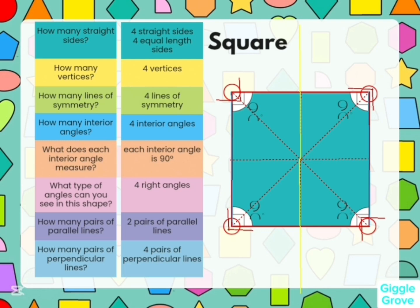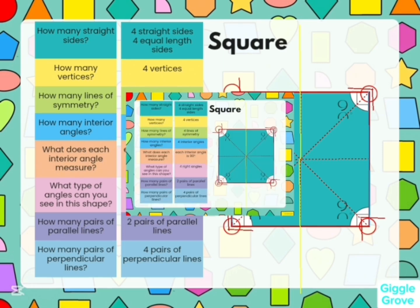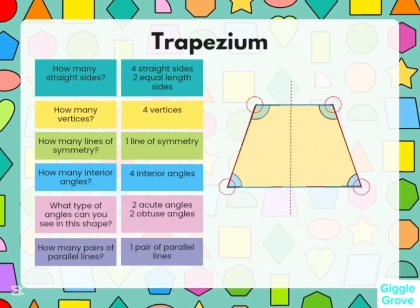And you can see there are four pairs of perpendicular lines in a square. Trapezium is having four straight sides and two equal length sides, four vertices, one line of symmetry, four interior angles, two acute angles, two obtuse angles, and one pair of parallel lines.